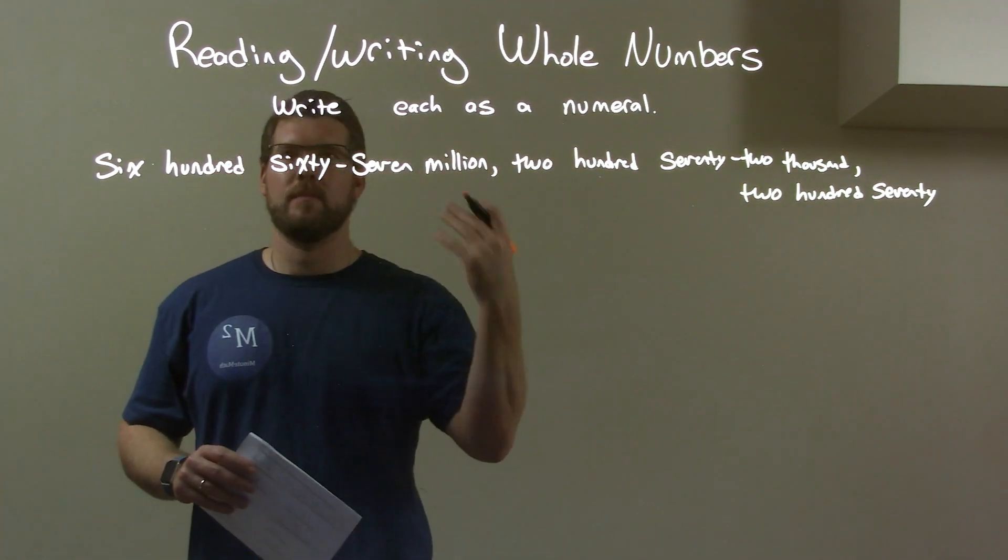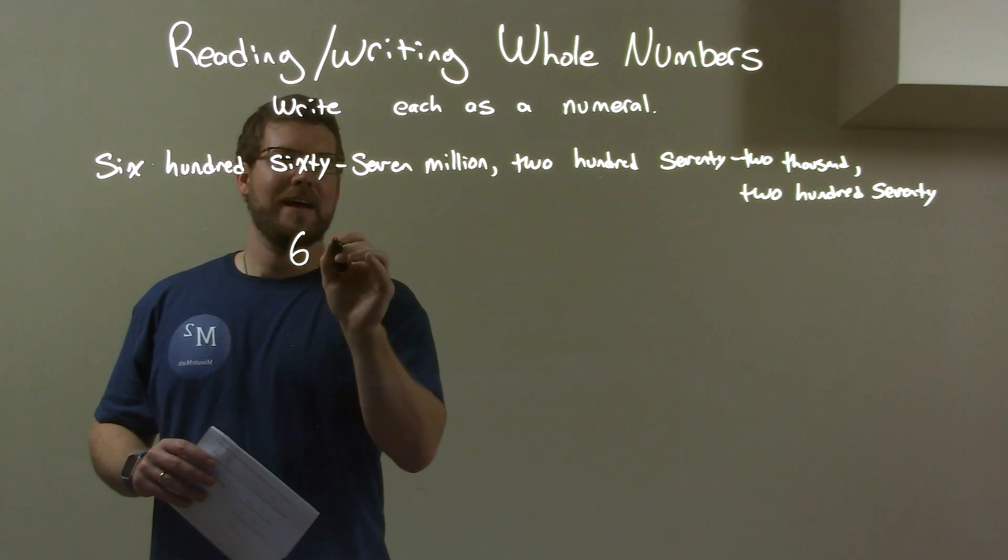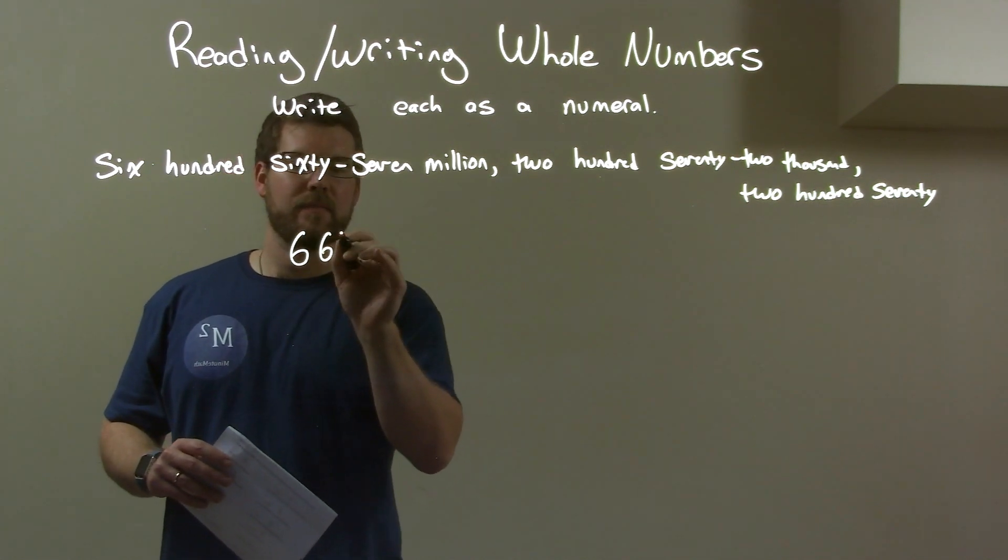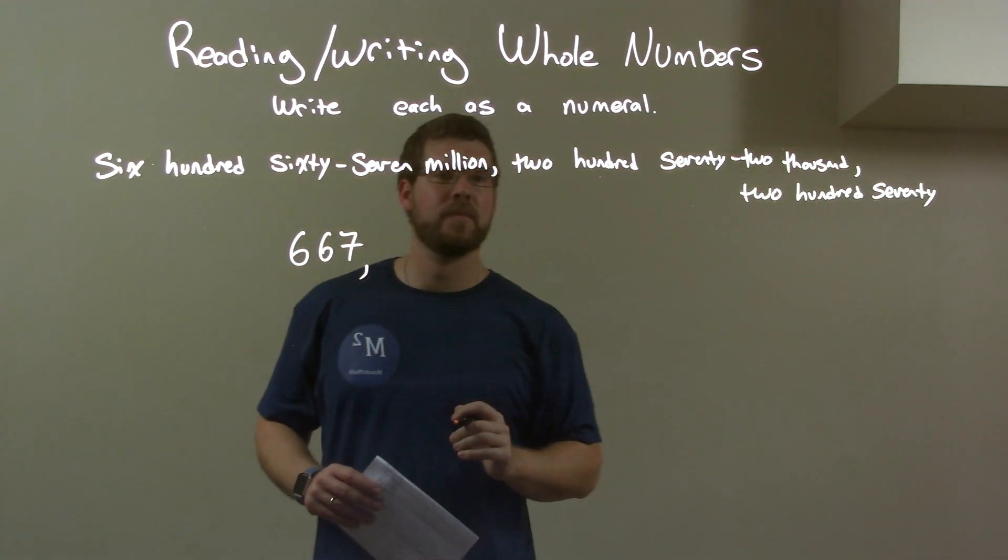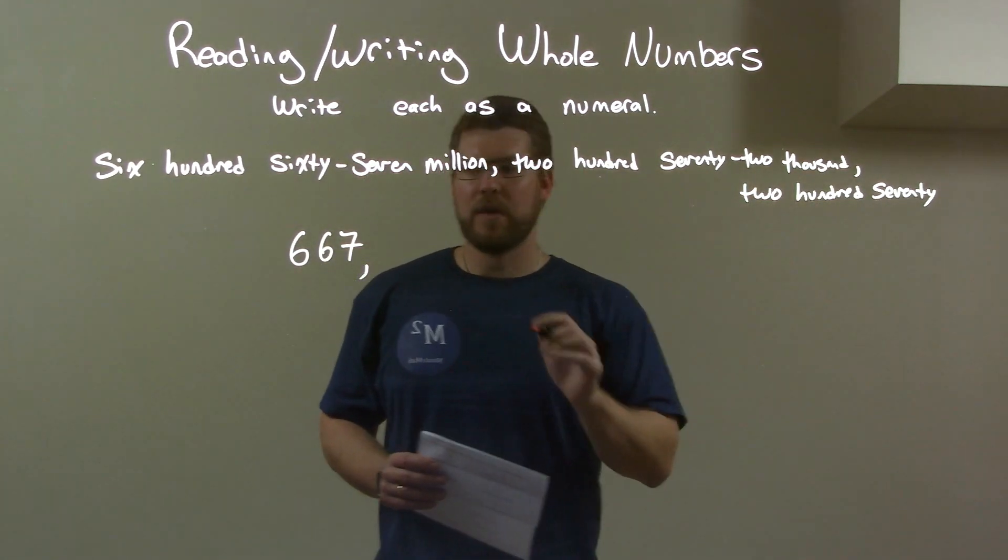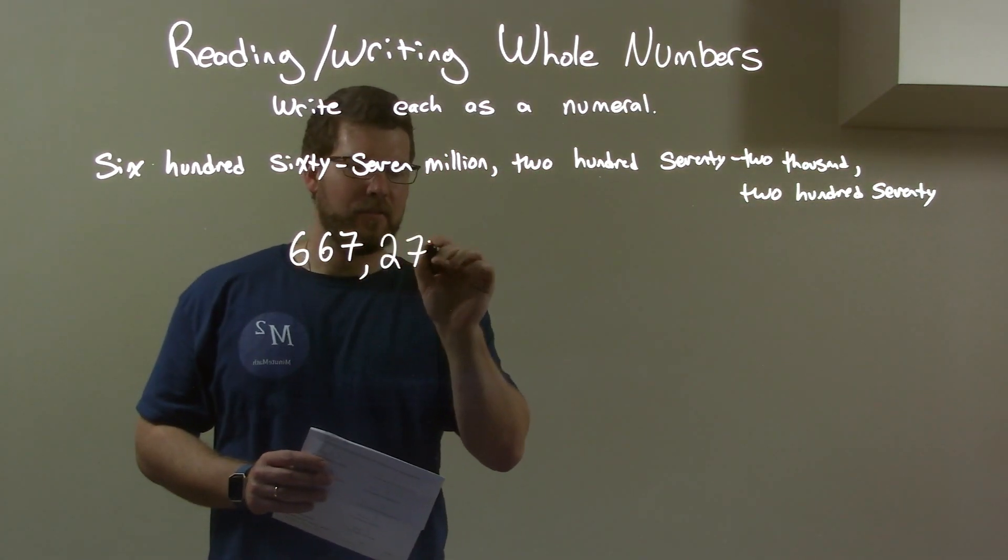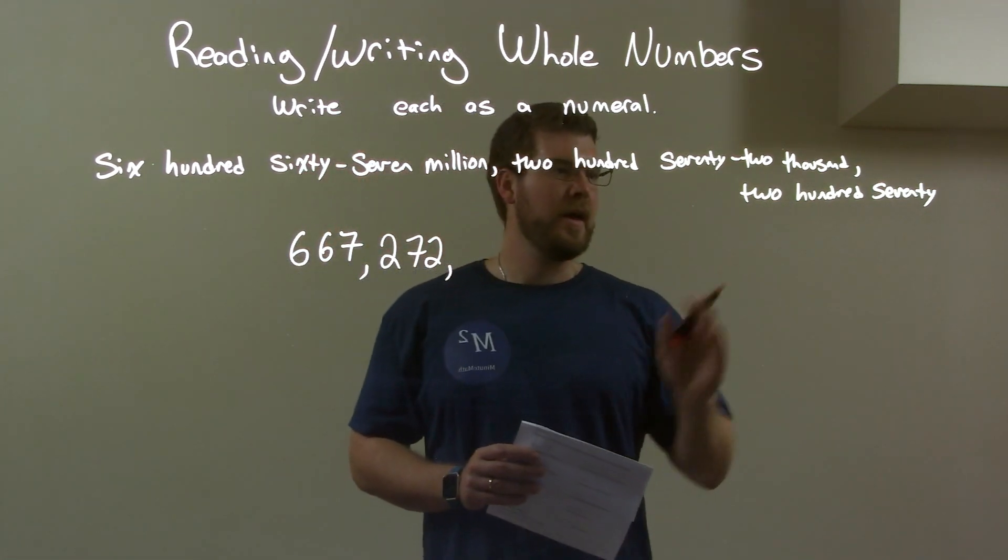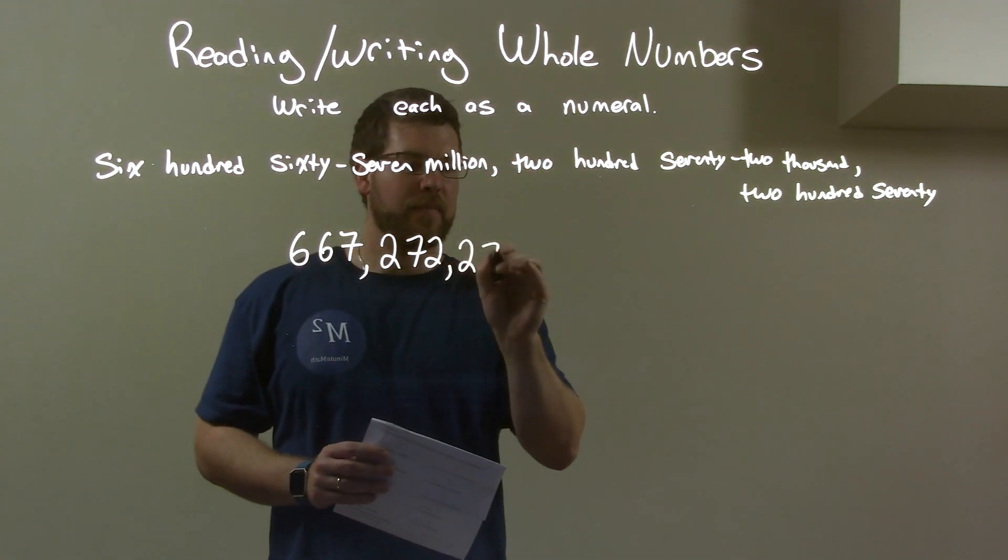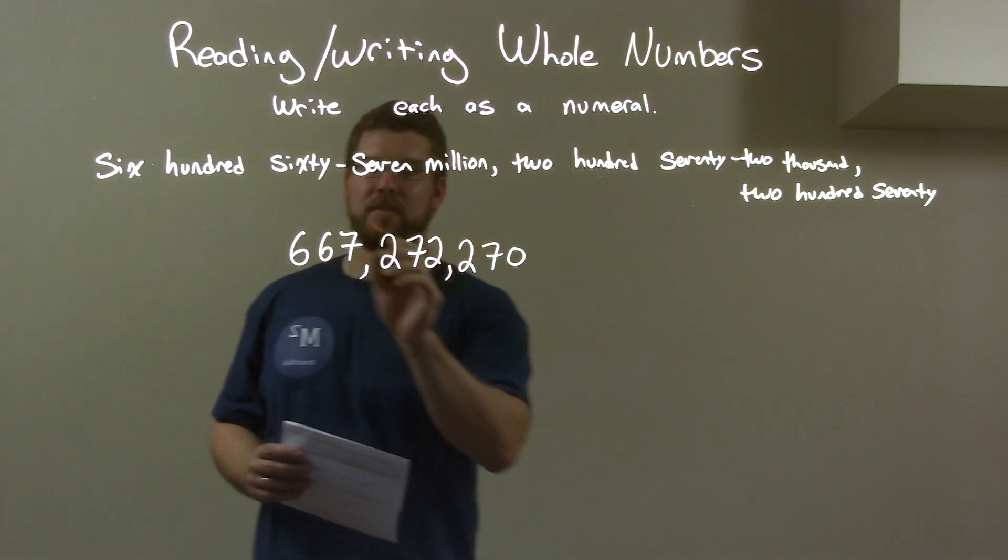Six hundred sixty-seven million. So we have six hundred and then sixty-seven, and this is in the millions, so there's six places afterwards. Two hundred seventy-two thousand, so two hundred and seventy-two in the thousands area, which is three places afterwards. Two hundred and seventy. And there we have it.